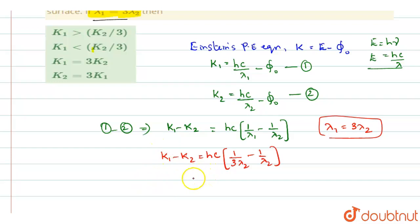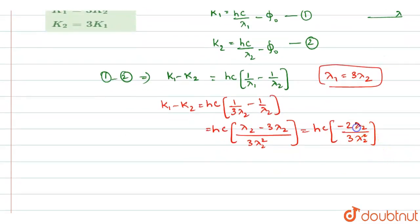K1 minus K2, we shall take it as it is. You will get here in terms of brackets as 3 by lambda 2. So I will write one more step. H C into lambda 2 minus 3 lambda 2 by 3 lambda 2 square is the value you have got. So in this, it becomes H C into minus 2 lambda 2 divided by 3 lambda 2 square. So this one lambda 2 gets cancelled. So you will be retained with K1 minus K2 is equal to minus 2 H C by 3 lambda 2.